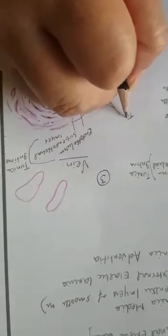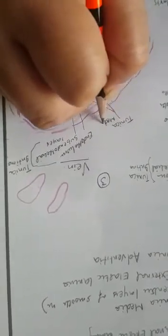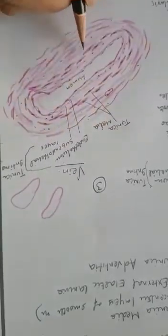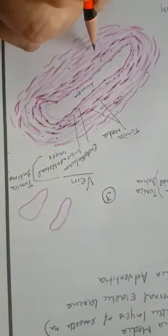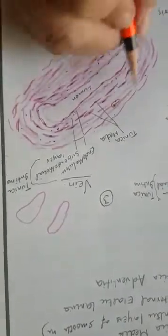This is tunica media, which consists of only two layers of smooth muscles. They're almost scattered here.